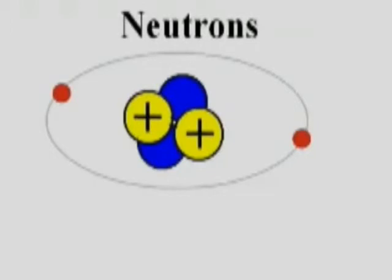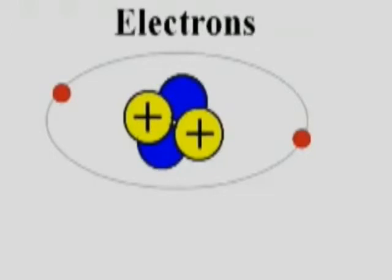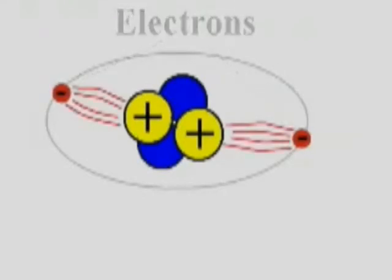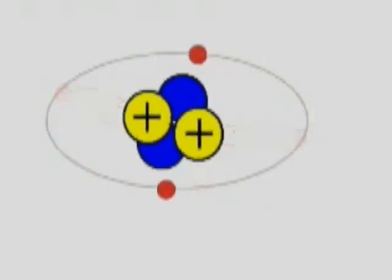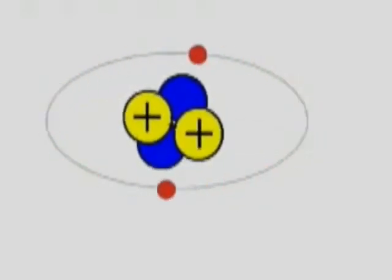Small charged particles called electrons exist outside of the nucleus. Electrons have a negative charge and they are attracted to the positively charged protons. The electrons move in high-speed orbits around the nucleus, held close to the nucleus by the strong force of attraction from the protons.